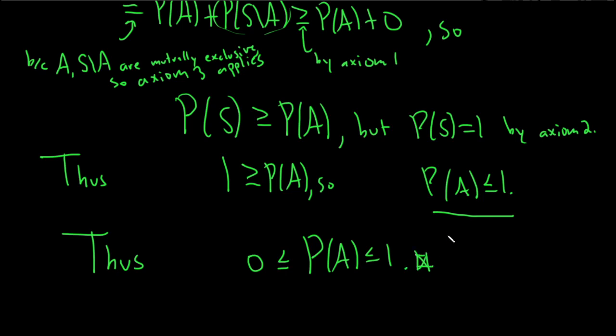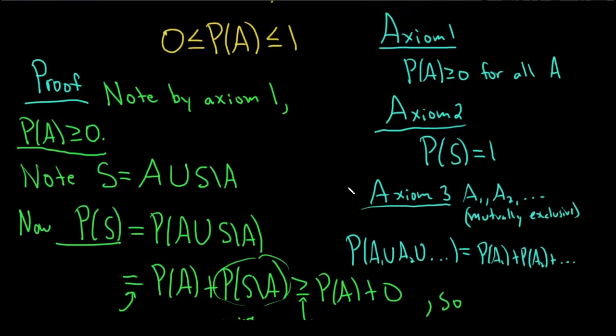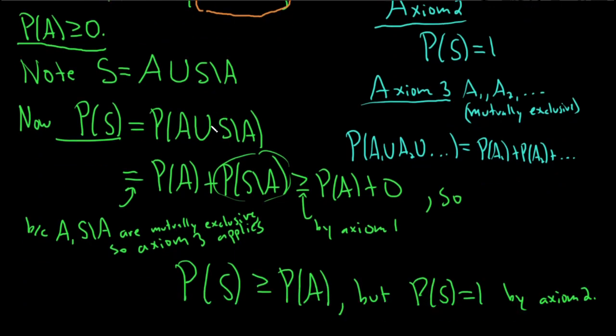So kind of a nice problem, because we ended up using, if we go back, we ended up using, I think, all the axioms, right? Let me get a different color here. So we used axiom 1 right here.